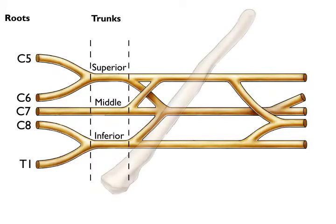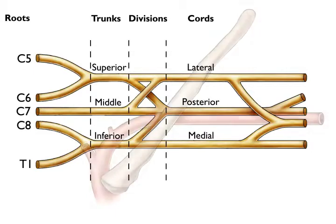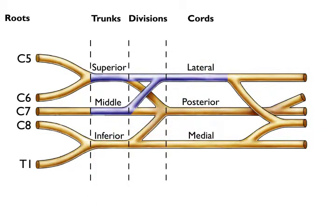Moving downwards towards the clavicle, each trunk separates into an anterior division and a posterior division. These divisions form the lateral cord, the posterior cord, and the medial cord. The cords are named based on their location relative to the axillary artery. The anterior divisions of the superior trunk and middle trunk form the lateral cord. The three posterior divisions come together to form the posterior cord. The anterior division of the inferior trunk continues as the medial cord.